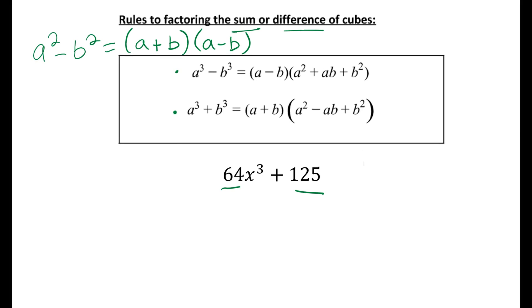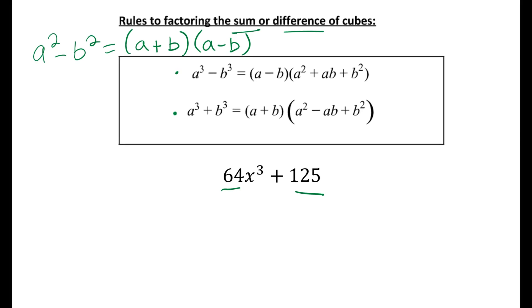So let's take a look at this. If I have 64x³, I'm going to ask myself what would I have to cube to get that whole thing. To get 64, I would have to cube 4, and to get x cubed, I would have to cube x. So if I'm looking at this sum formula, my a value is 4x. For my second term, I ask myself what would I have to cube to get 125. The answer is 5, so that's my b value. Once I know what those two things are,